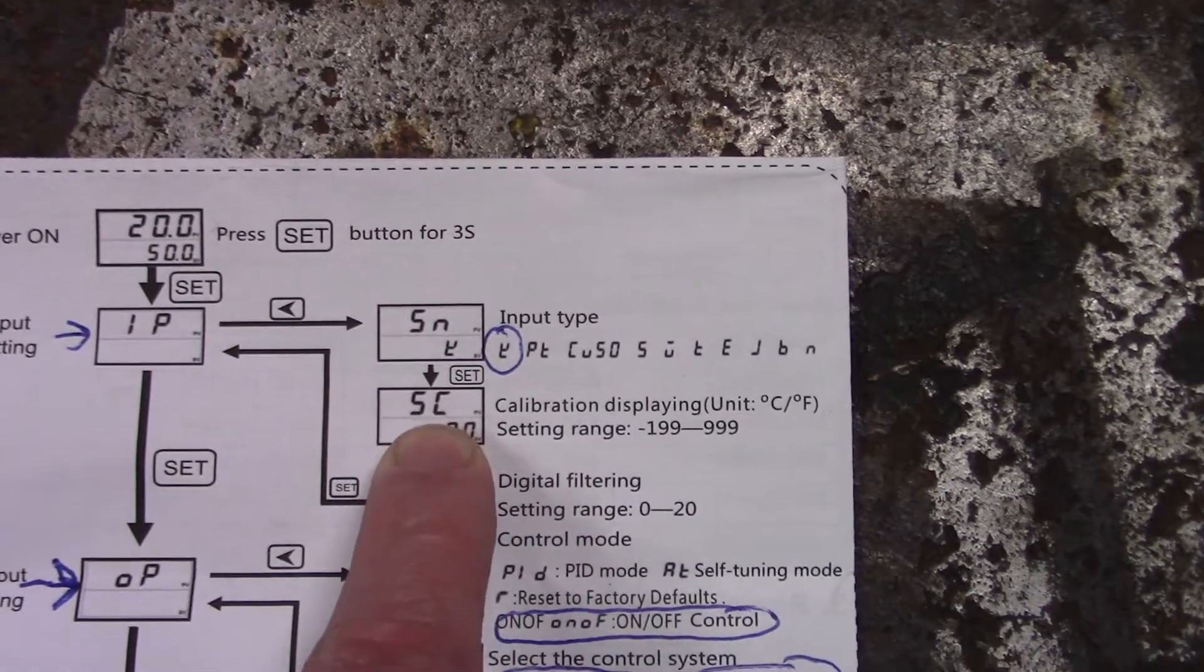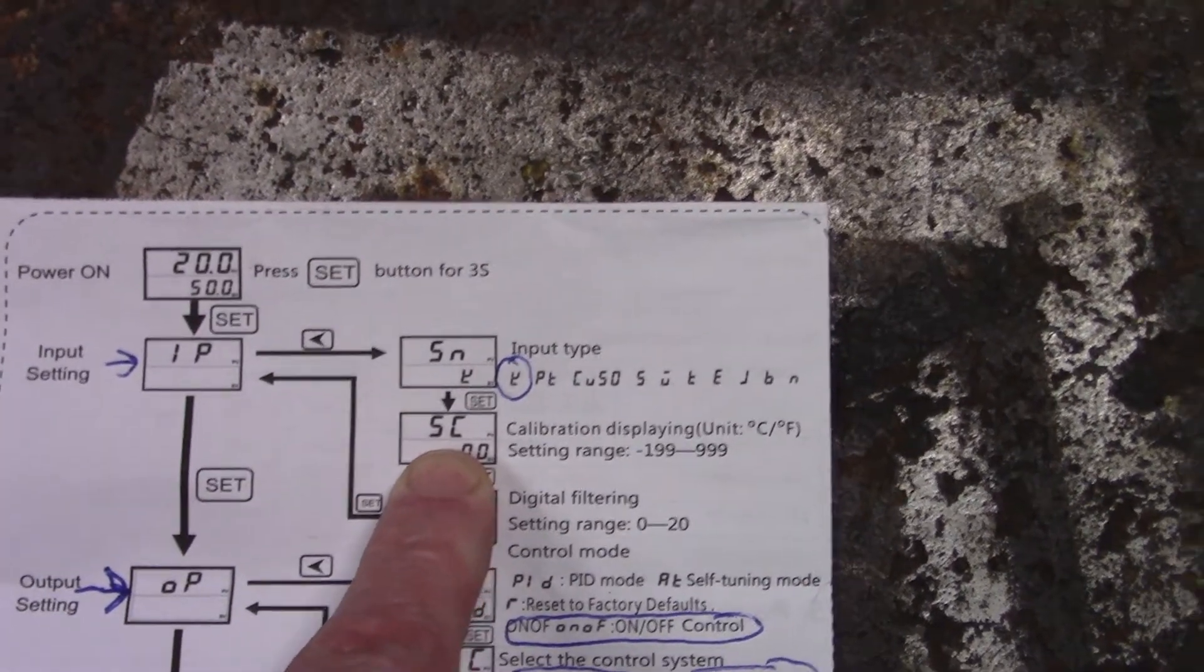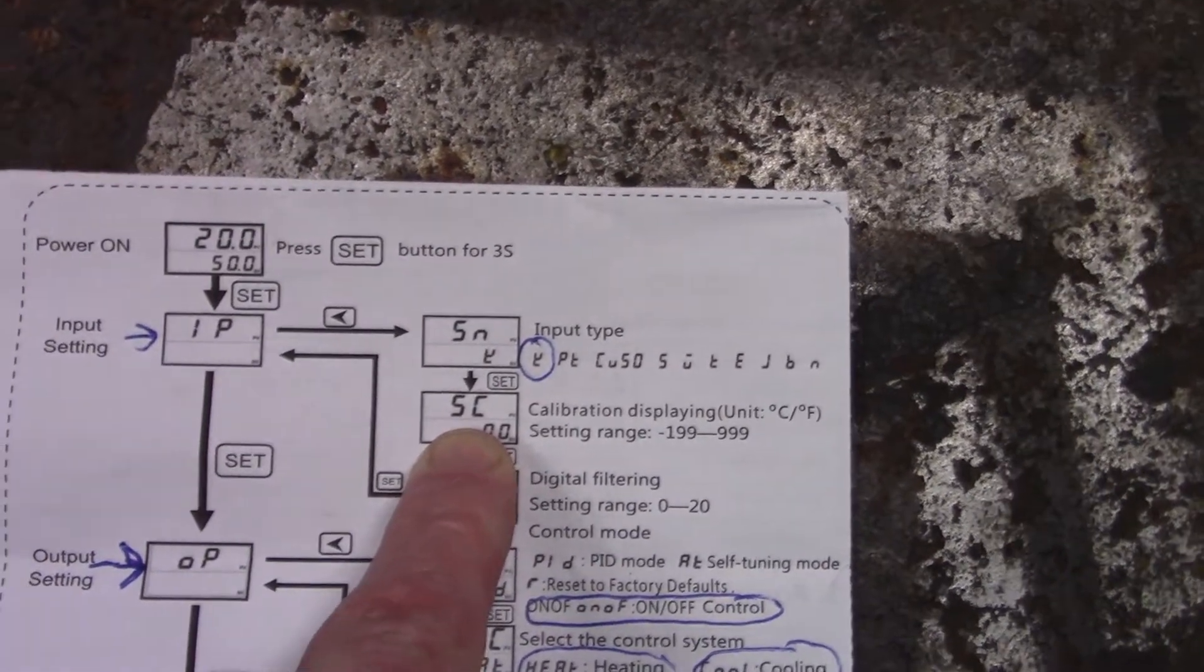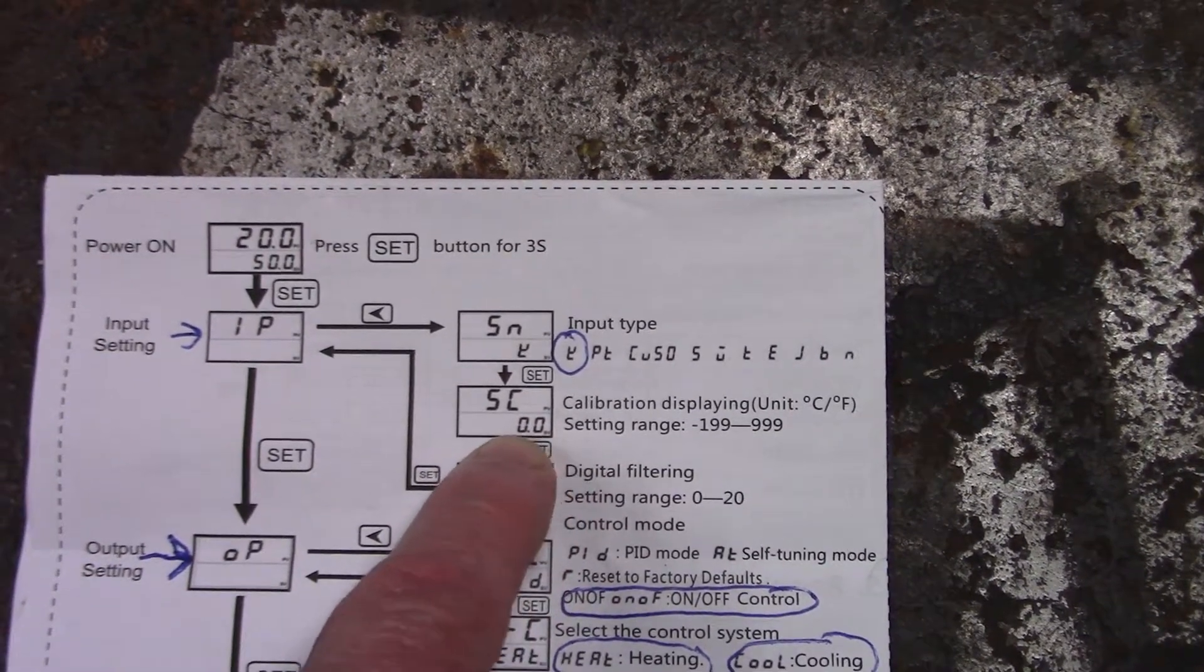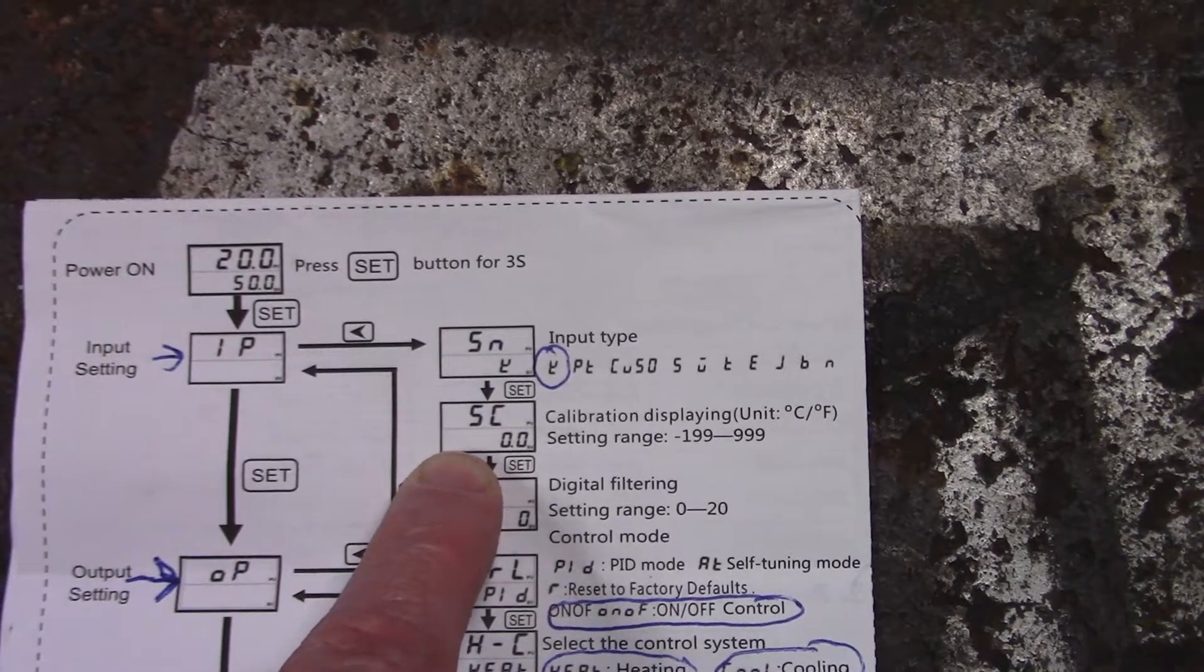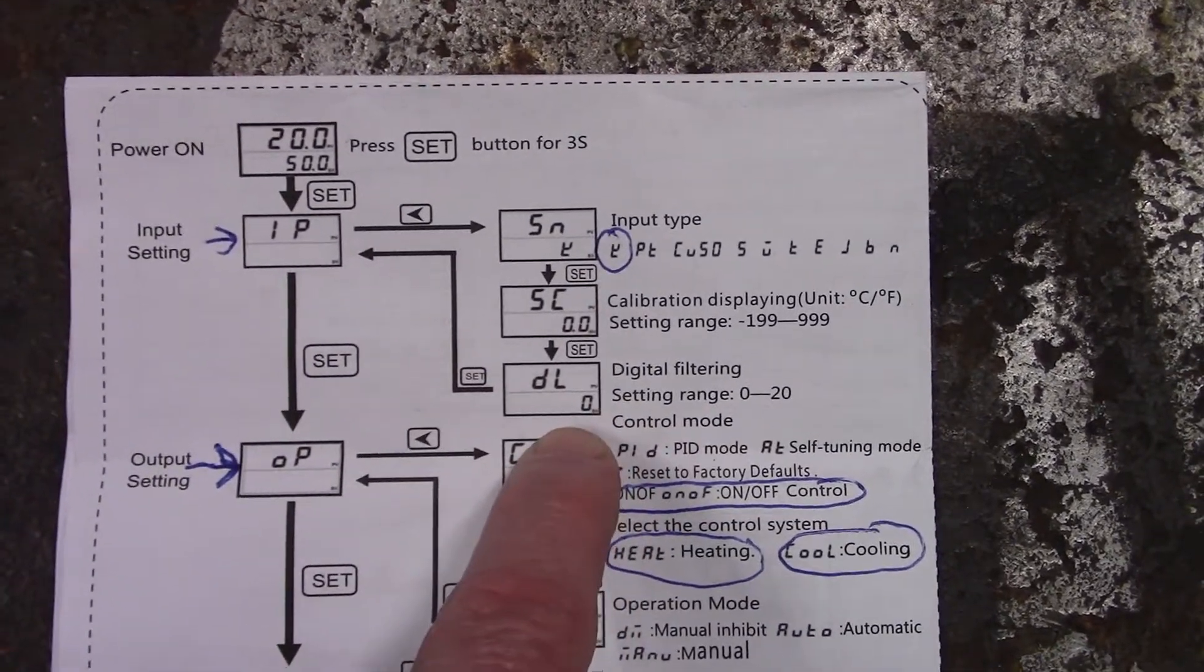SC is if you find that your thermocouple is not quite reading right, you can set an offset range in here and that way you can have your gauge read properly. Not going to worry about digital filtering.